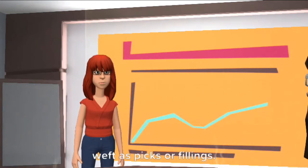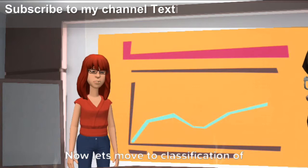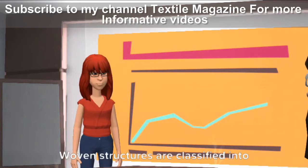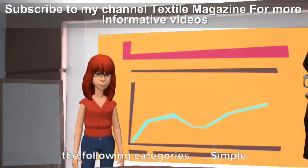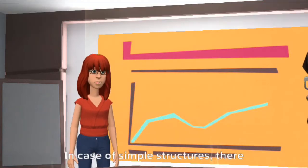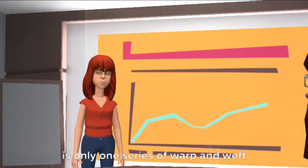Now let's move to classification of woven structures. Woven structures are classified into the following categories: simple structures and compound structures. In case of simple structures, there is only one series of warp and weft threads.